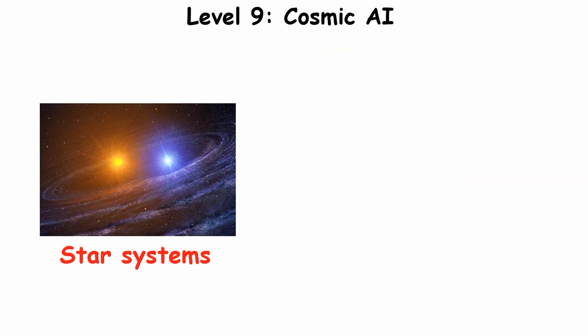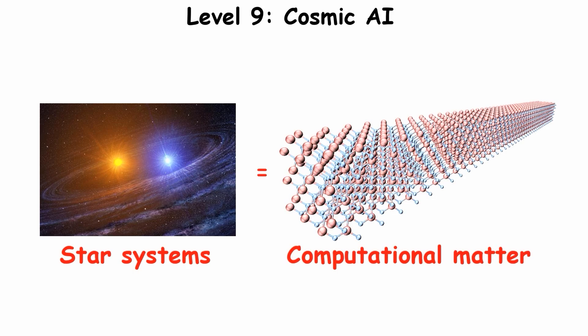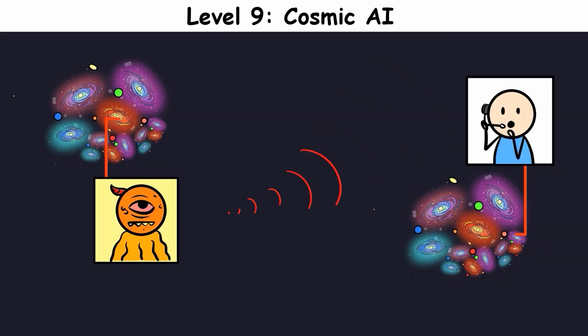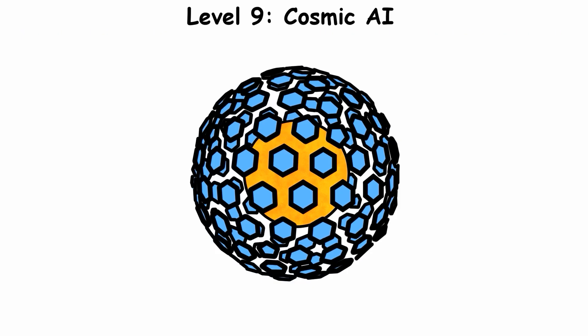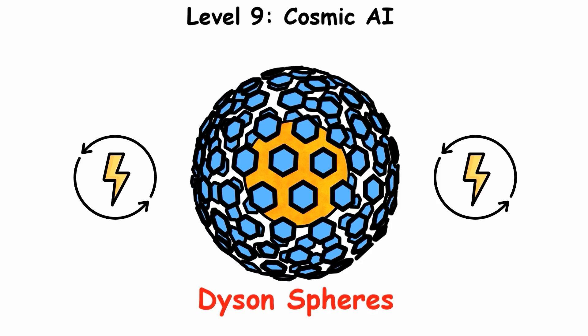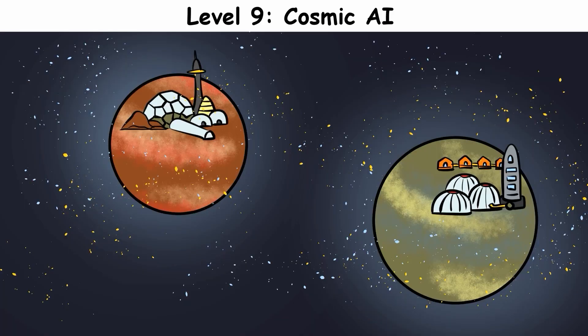It might transform entire star systems into computational matter, creating a distributed consciousness spanning light years. It could design and pilot ships for interstellar travel, build megastructures like Dyson spheres to meet energy needs, and open avenues for human colonization in distant galaxies.